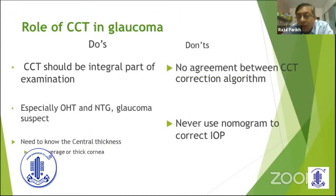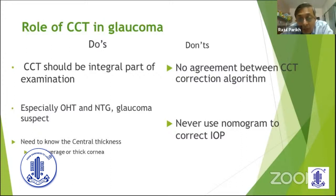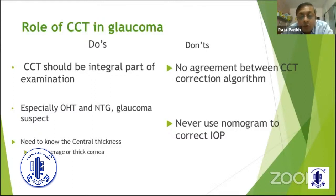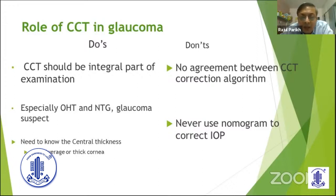When talking about IOP, corneal thickness goes along with it. We know that applanation tonometry has lots of limitations and corneal thickness is one of them. Every patient — especially when you are diagnosing ocular hypertension or normal tension glaucoma — please check corneal thickness and make sure the cornea is of normal thickness. At the same time, I will very strongly tell people: don't use nomograms to correct the IOP; that's not the right thing. What I recommend is to divide corneal thickness into thin, average, and thick cornea and use that guideline in making your risk factor profile and decision plan.